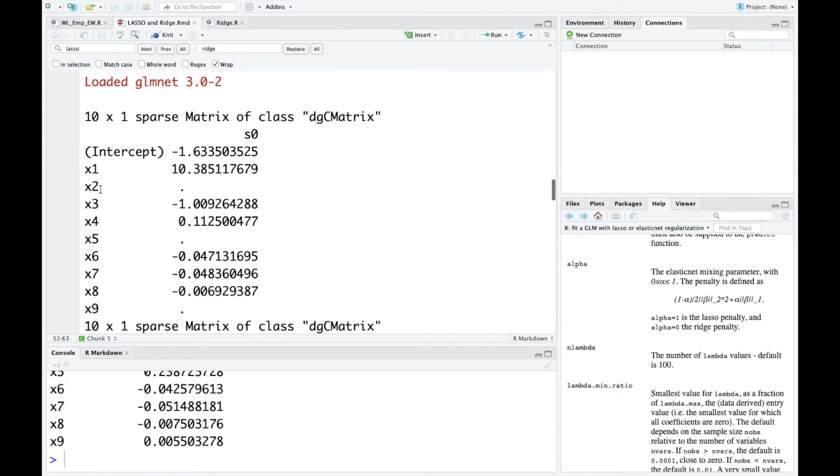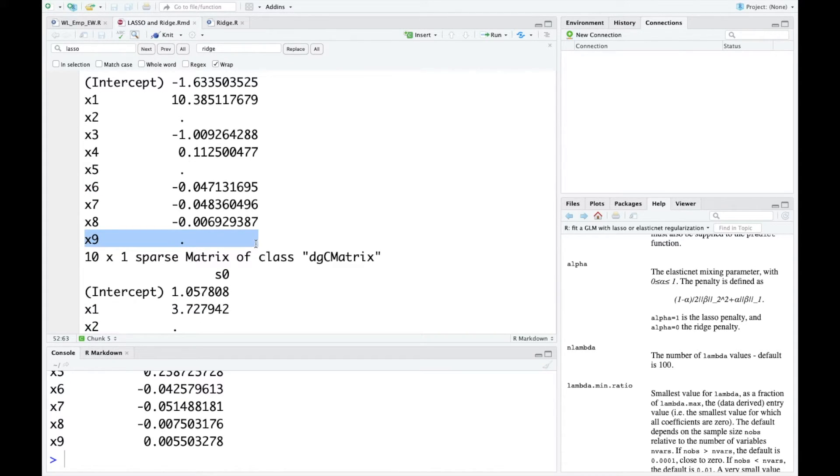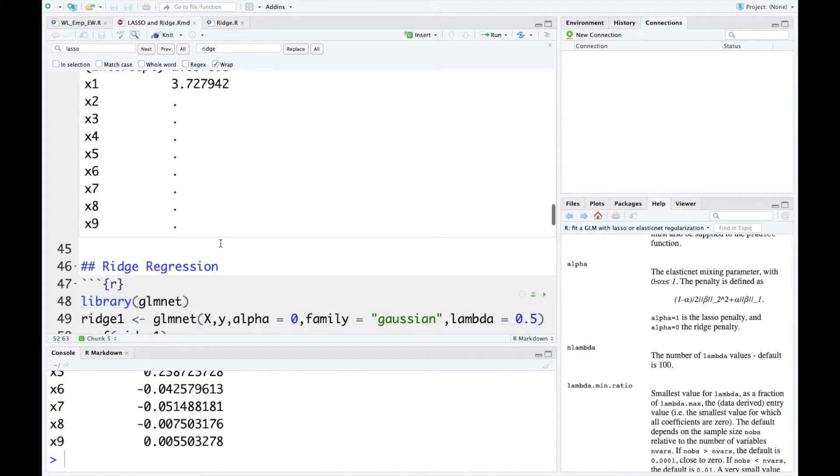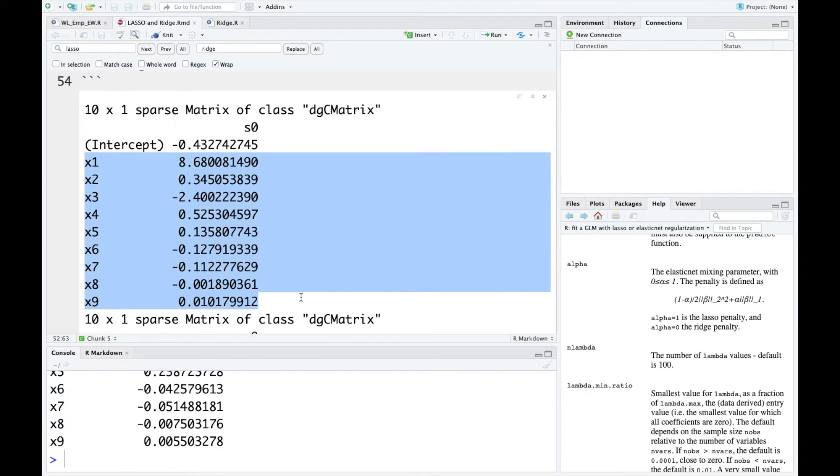For Lasso regression, it shrinks some of the coefficients to 0, or at least it's possible for Lasso to shrink certain coefficients to 0. And then in this case, those variables are eliminated from the model. So we can say that Lasso actually selects variables for you. However, for ridge regression, it never selects variables for you since all the coefficients are not 0.